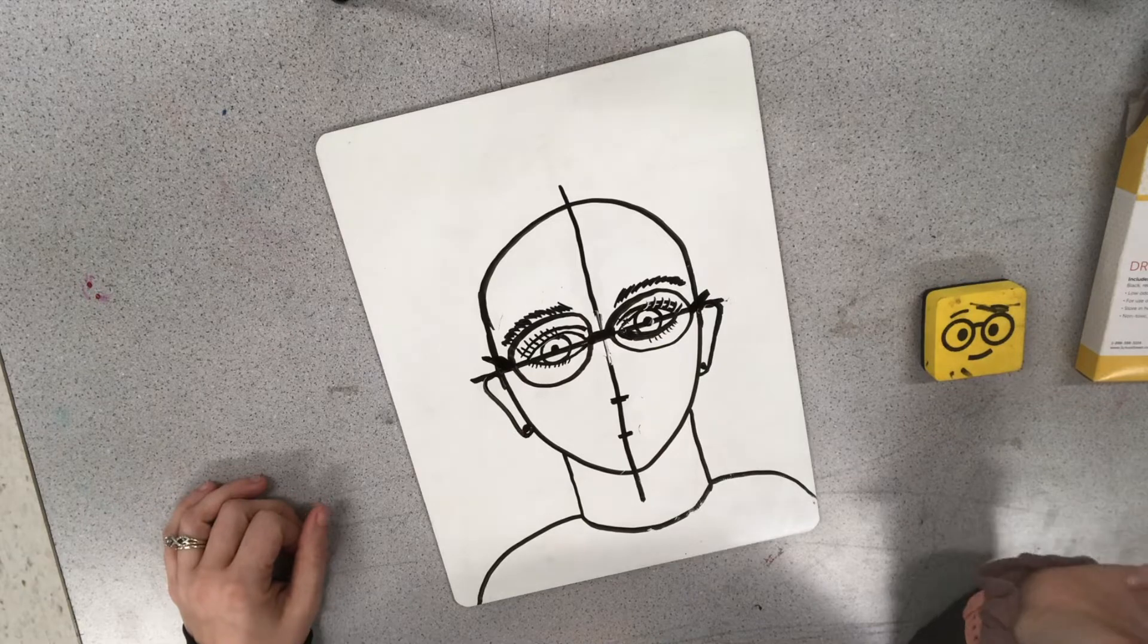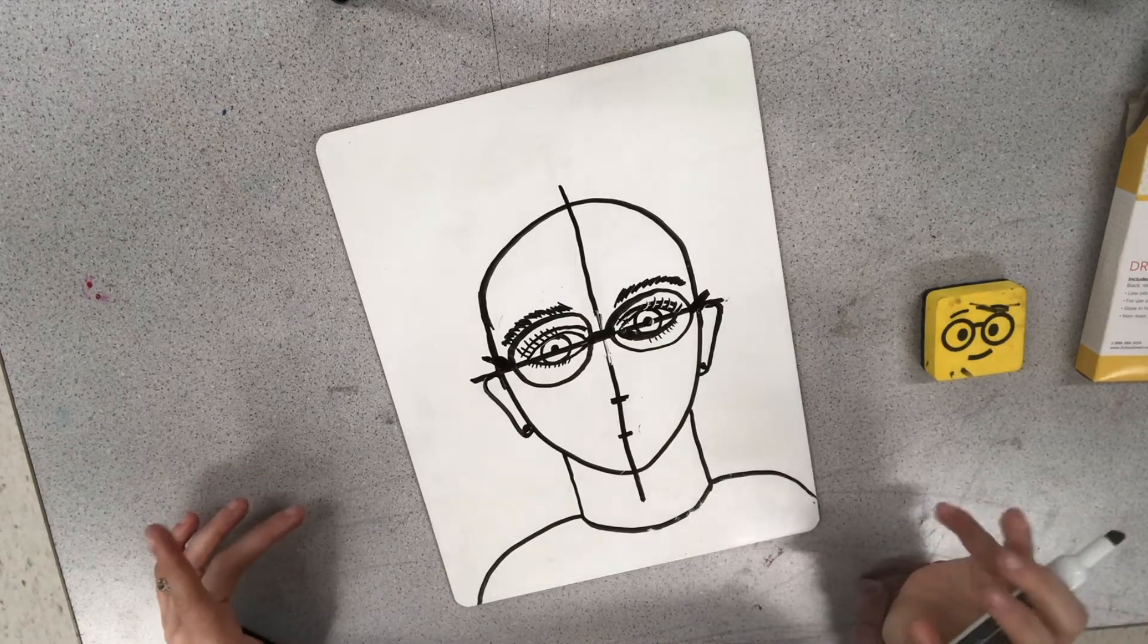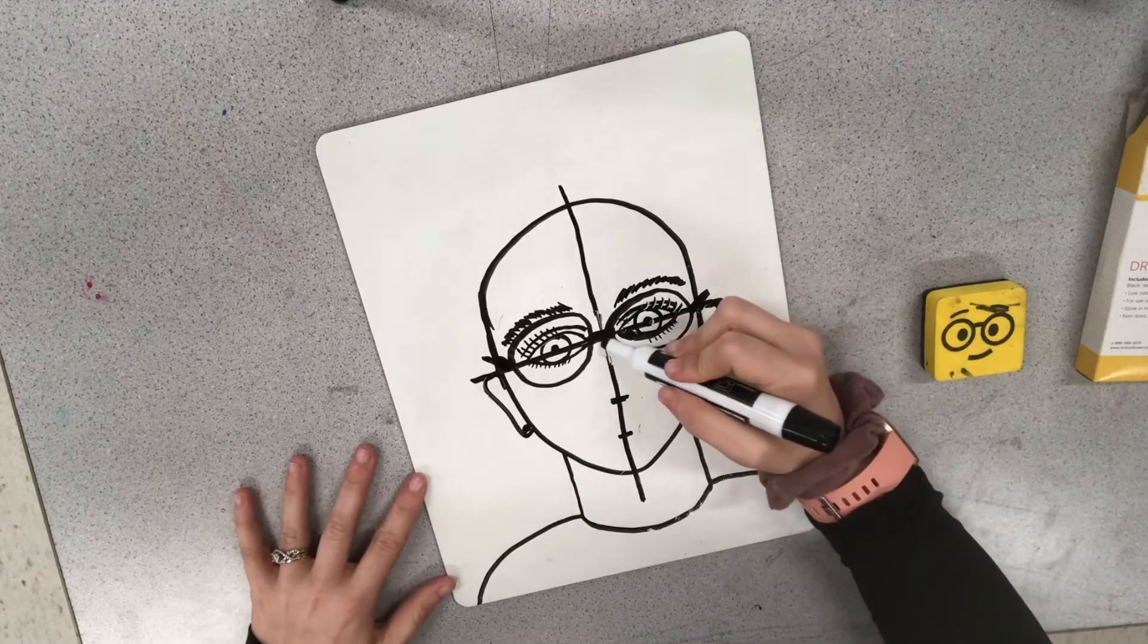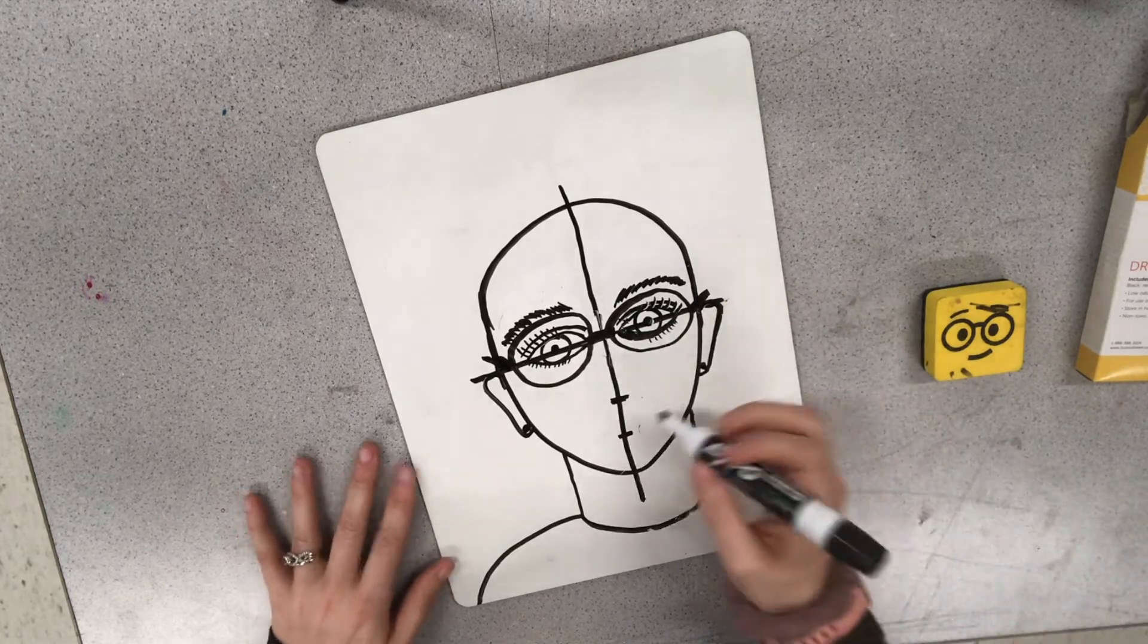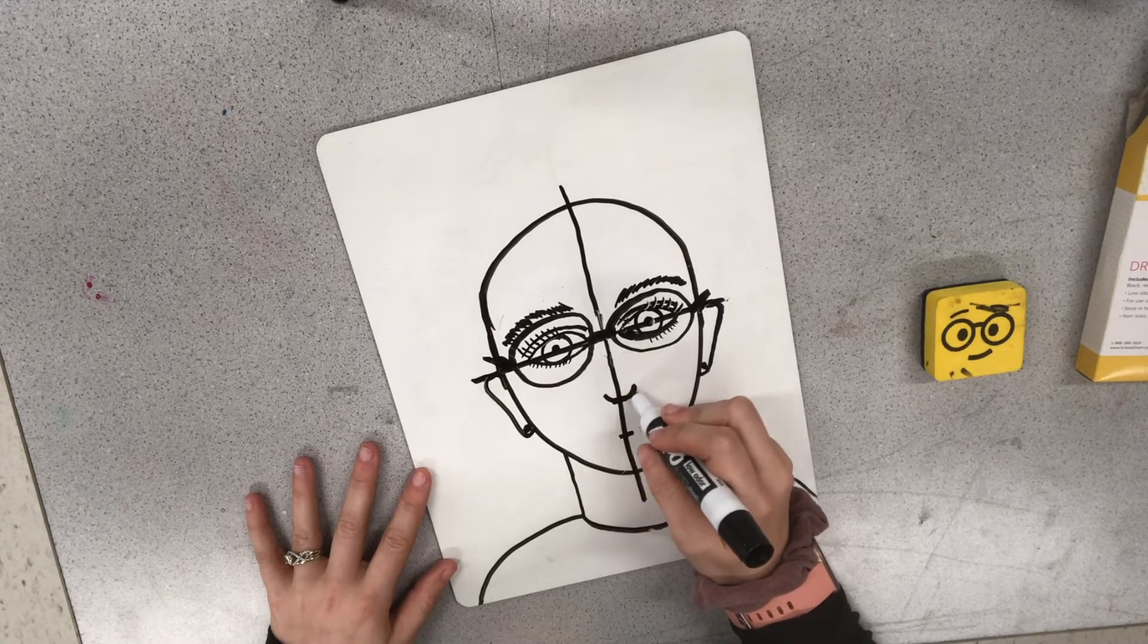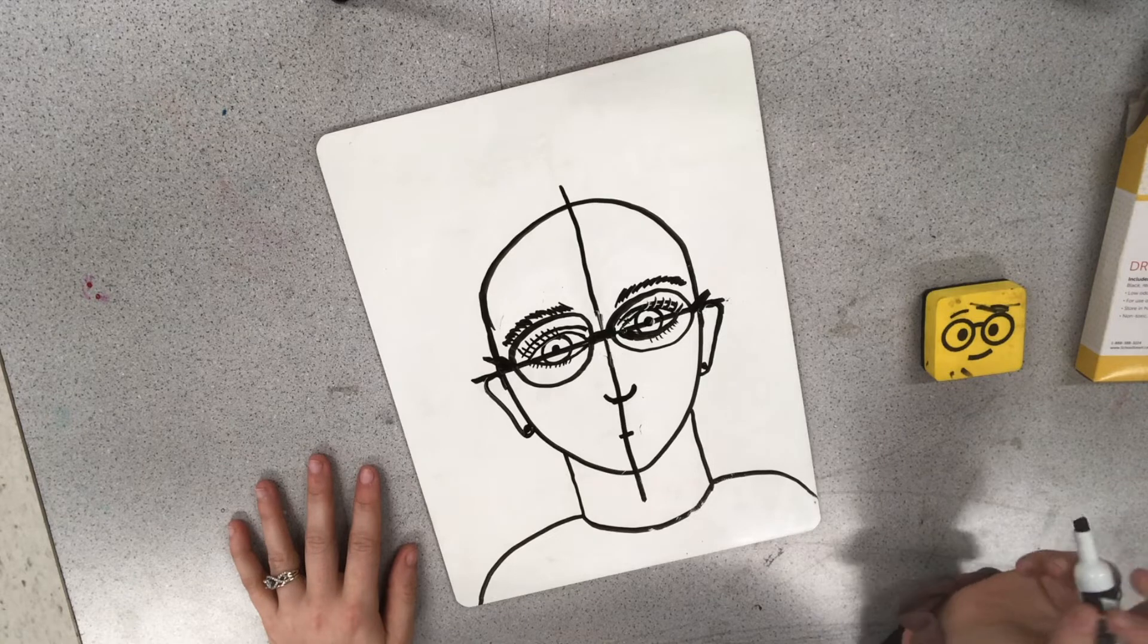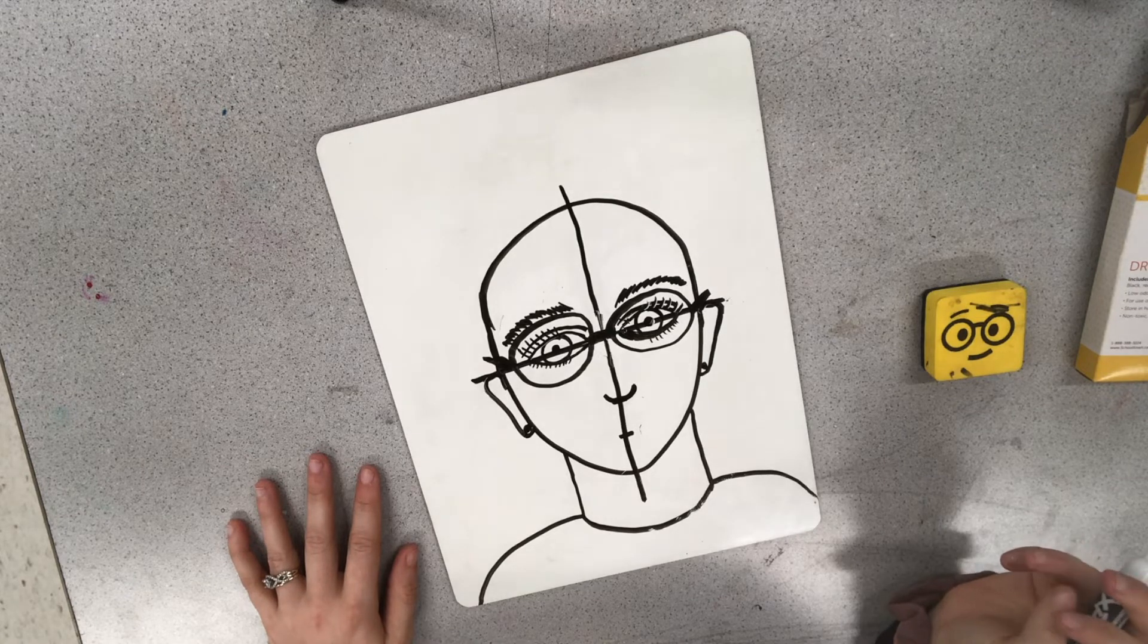Alright, let's add in the nose next. The nose can be tricky, but if you follow these couple little steps, this will help you make them. Now, I'm going to start with kind of a U shape. So just a U.